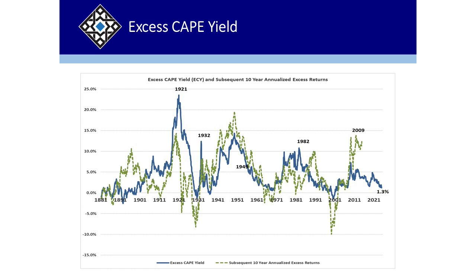The market is expensive — very expensive. But it's not necessarily what you think it is. There's also a concept called the excess CAPE yield, which is kind of like the Fed model. It takes the inverse of the CAPE to get an earnings yield, then compares that to the real 10-year rate. That's supposed to tell you what the expected return is over the next 10 years. We've got some slides to show you, and right now current expectations are extremely low. He uses the nominal 10-year minus the CPI, which gets a slightly different number.